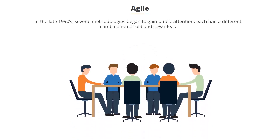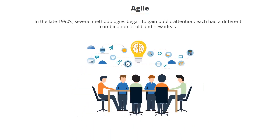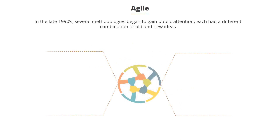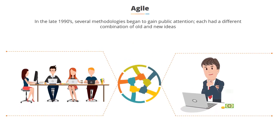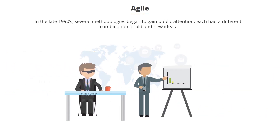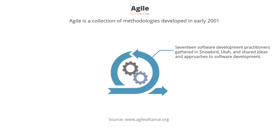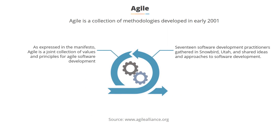In the late 1990s, several methodologies began to gain increasing public attention, each having a different combination of old and new ideas. These methodologies emphasized close collaboration between the development team and business stakeholders, frequent delivery of business value, tight self-organizing teams, and smarter ways to craft, confirm, and deliver code. Agile software development is an umbrella term for a set of methods and practices based on the values and principles expressed in the Agile manifesto.